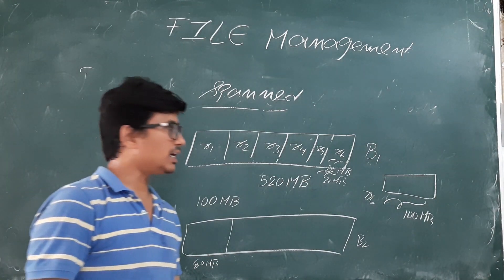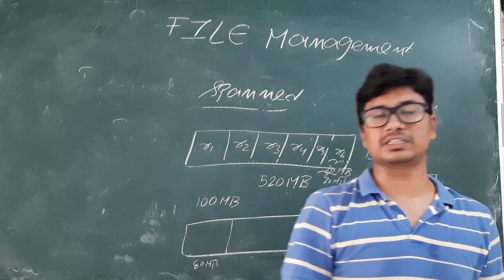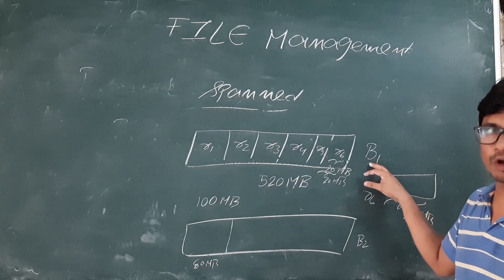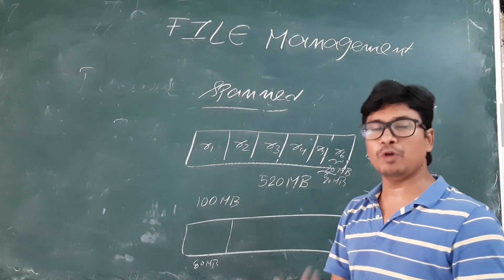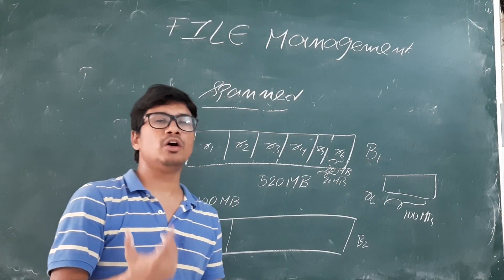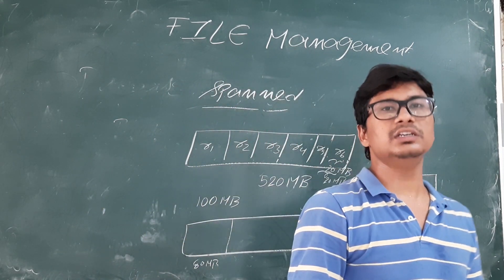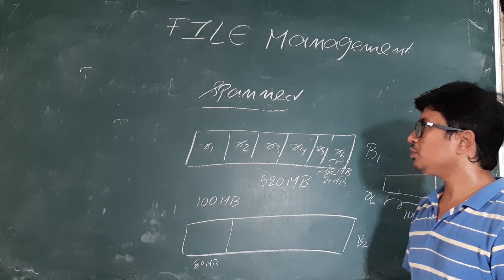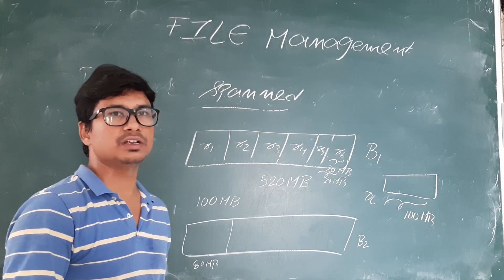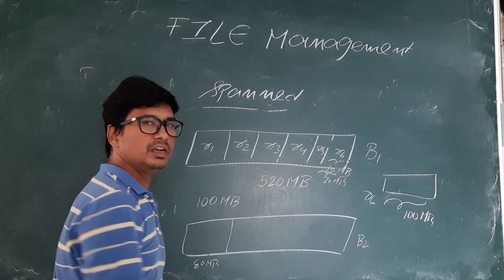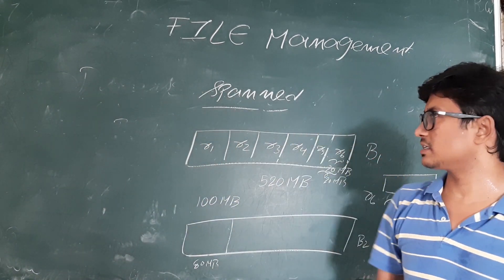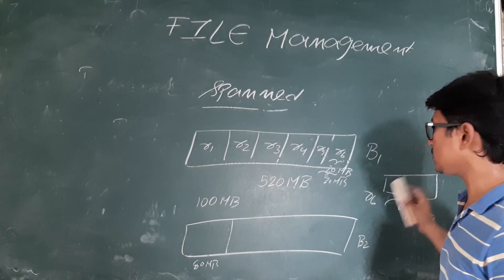The drawback of the spanned strategy is that if I want to access record 6, I have to access block 1 and also block 2. So the drawback is that the number of block accesses will be more. But the advantage is that it avoids memory waste. The spanned strategy will be useful when the records are of different sizes — when record sizes are not uniform, we go for the spanned strategy.